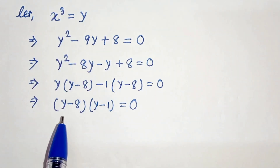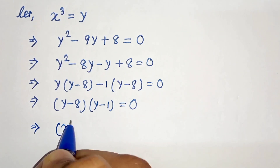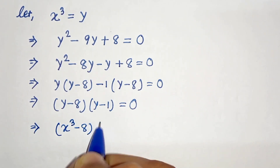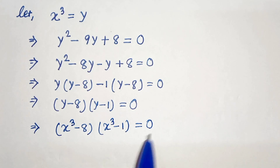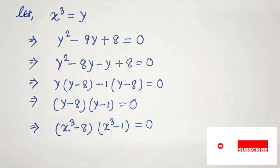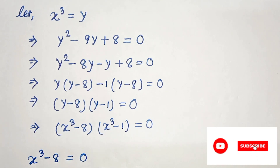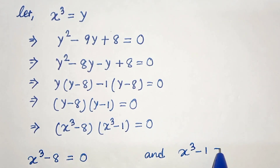Since our y is x cubed, we can write it as x cubed minus 8 times x cubed minus 1 equals to 0. So from this we can write x cubed minus 8 equals to 0 and x cubed minus 1 equals to 0.